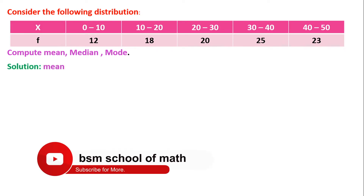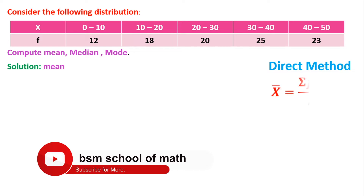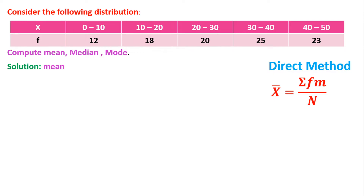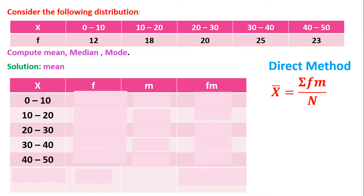Solution — mean, direct method. x-bar equals sigma(fm) by n. We will solve using direct method, shortcut, step deviation, then median and mode. Set up a table with columns: X (class interval), F (frequency), M (midpoint), FM, and cumulative frequency CF. First row: X is 0 to 10, frequency is given.